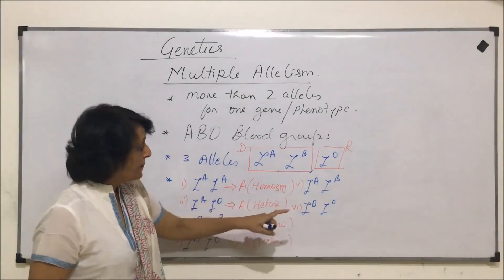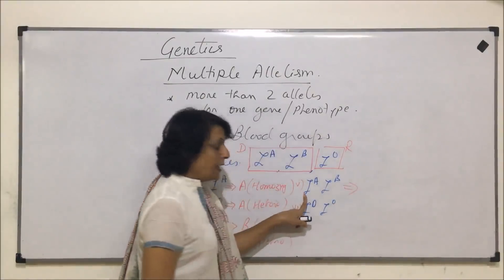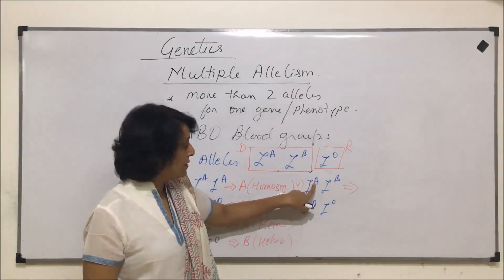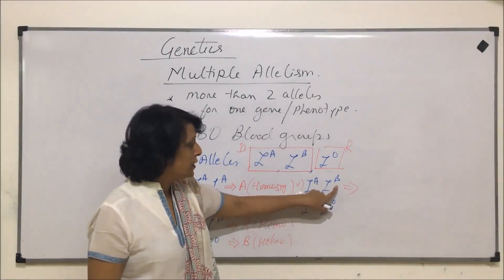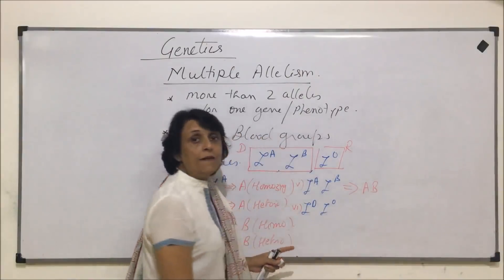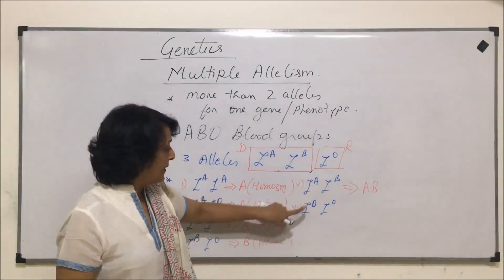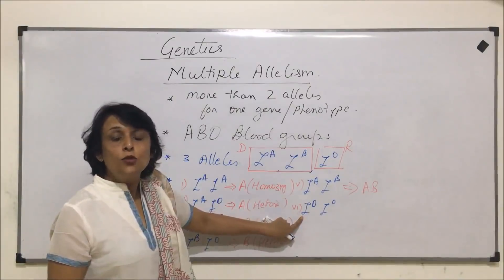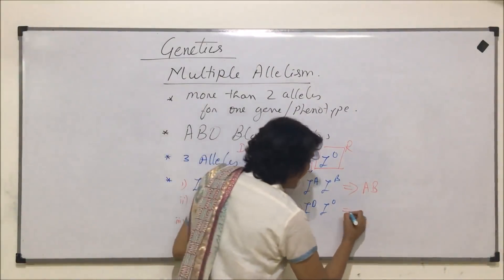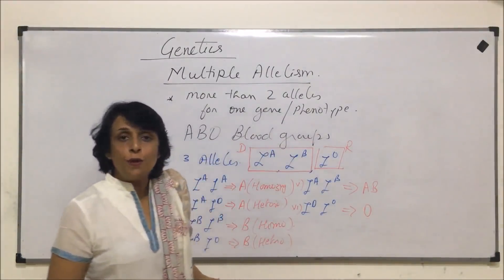In case 5, the blood group is going to be AB. The reason is there is one dominant allele responsible for A and the other is for B, so the blood group is AB. In the last situation, both alleles are the recessive IO IO, and that is why the blood group of this individual is going to be O.